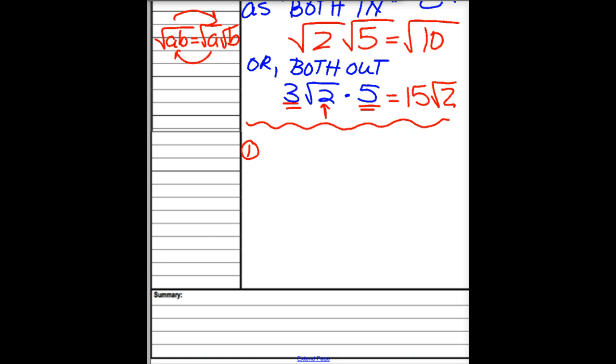Suppose I asked you to do the square root of 5 times the square root of 10. Those are both in. What that means is I can consolidate them and bring them in as the square root of 5 times 10. Put them under the same roof. 5 times 10 is 50. This doesn't mean I'm done. You also need to simplify.